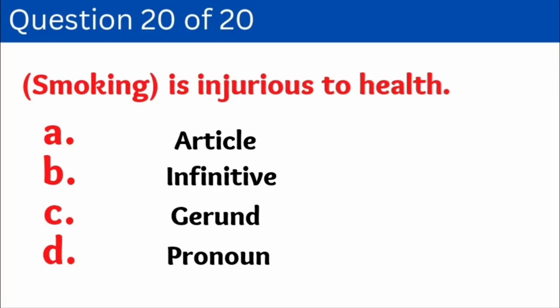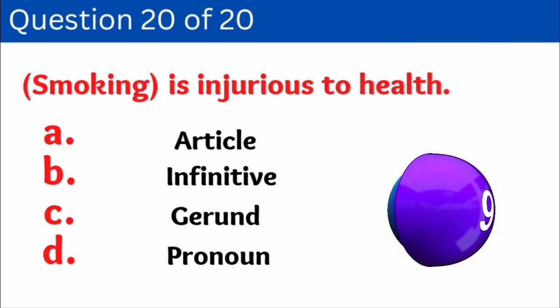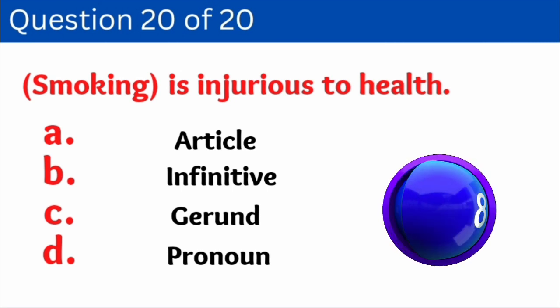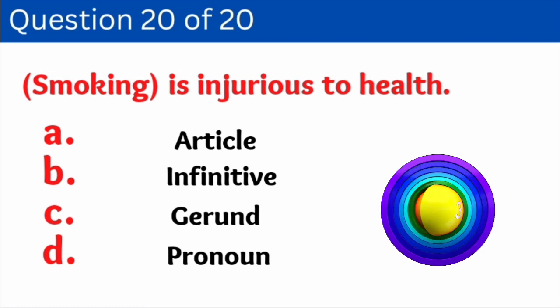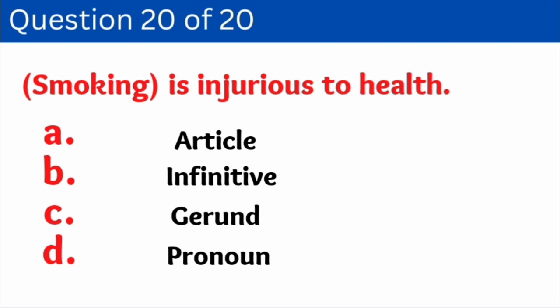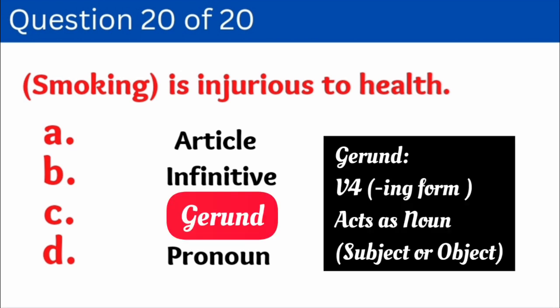Question number twenty: 'Smoking is injurious to health.' Here we have to identify how 'smoking' is used. Options: A. Article, B. Infinitive, C. Gerund, D. Pronoun. And the right answer is option C — Gerund. 'Smoking' is a verb and it is used here as a noun.